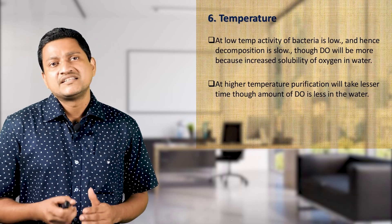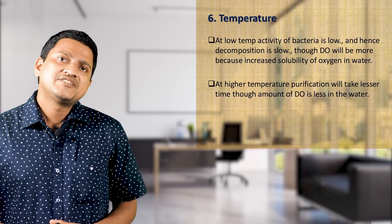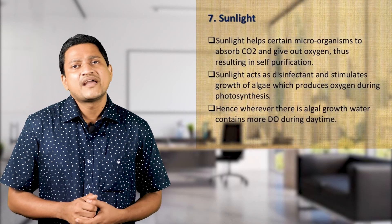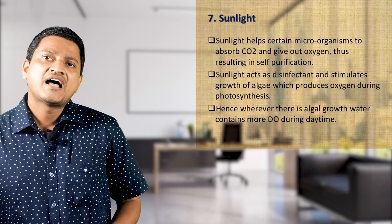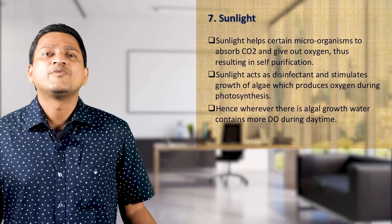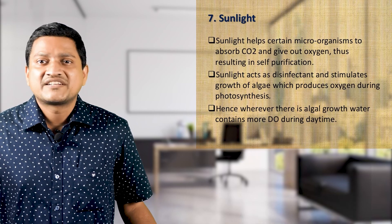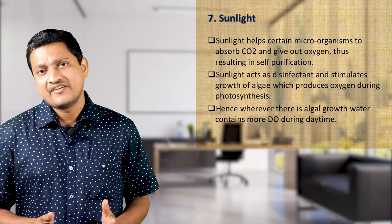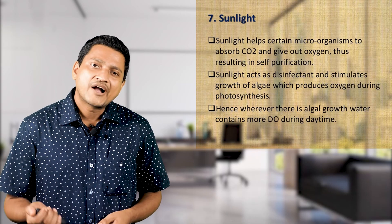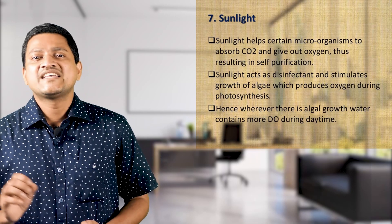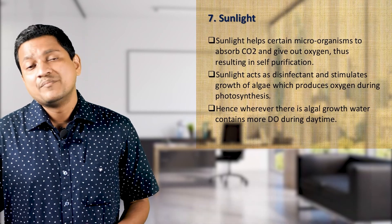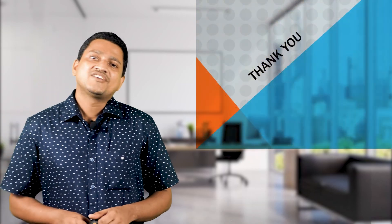The next component in self-purification is sunlight. Sunlight helps certain microorganisms — photosynthetic bacteria — to absorb CO2 and give out oxygen, resulting in a self-purification effect. Sunlight also acts as a disinfectant and stimulates the growth of algae, which produce oxygen during photosynthesis. This oxygen is available to aquatic organisms, so wherever there is algal growth, water contains more dissolved oxygen during daytime.